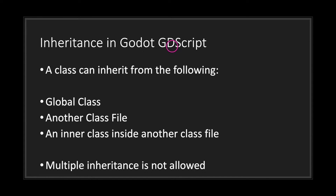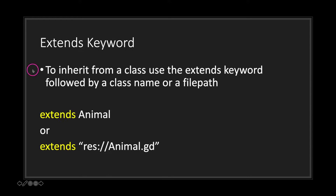In Godot you can inherit from the following: a global class, another class file, and an inner class inside another class file. One thing to keep in mind is that in GDScript multiple inheritance is not allowed. To inherit from a class simply use the extends keyword followed by a class name or a file path. When you use a file path you need to wrap it in double quotations, essentially turning it into a string.